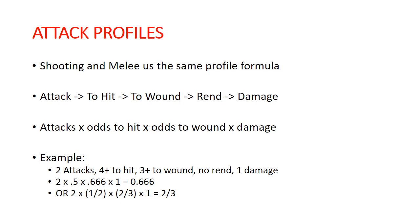I've left rend out of this for the moment — I'll talk about rend on the next slide. Our example here: two attacks, 4+ to hit, 3+ to wound, no rend, one damage — the basic liberator attack profile. So that is 2 × 1/2 × 2/3 × 1 damage, which equals 2/3 of a damage on average.